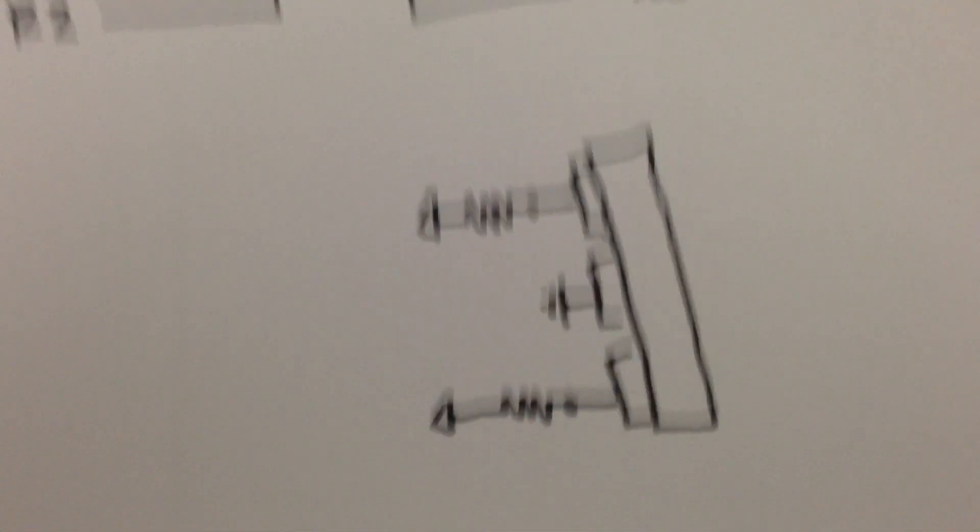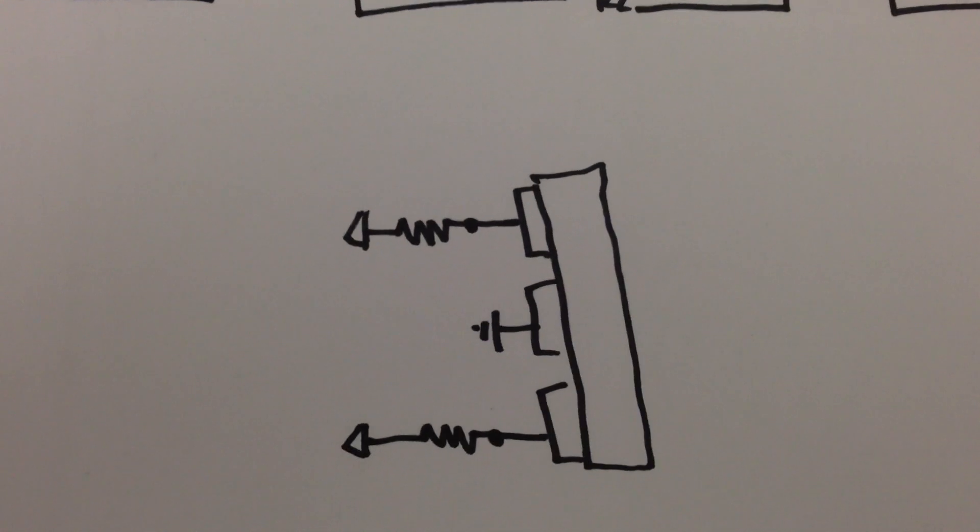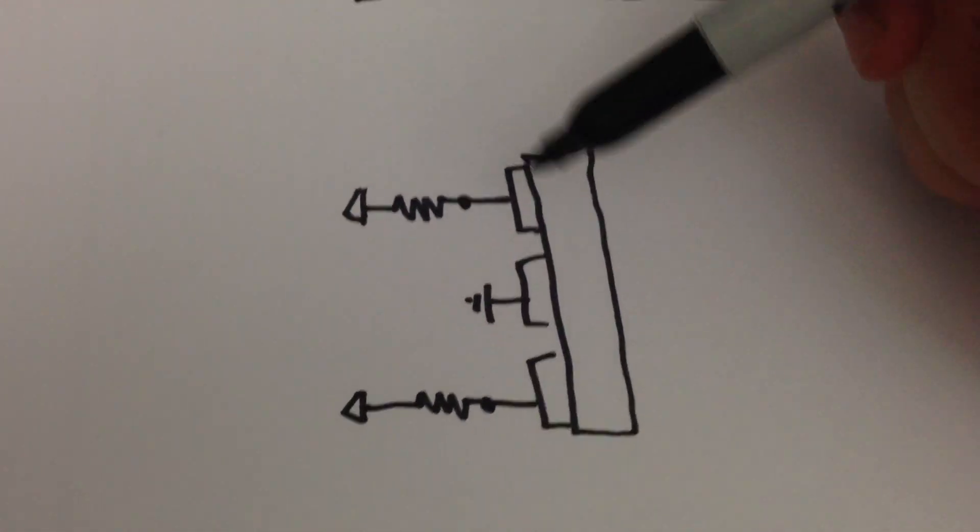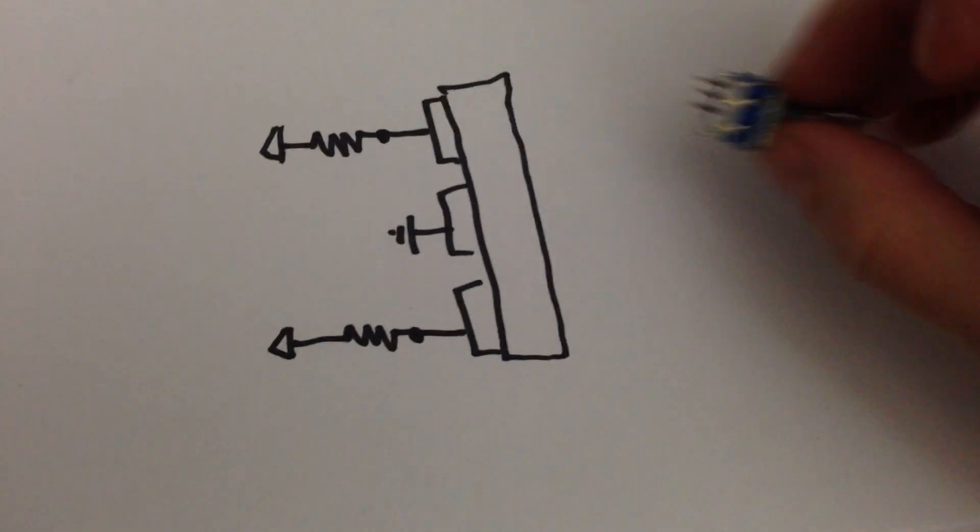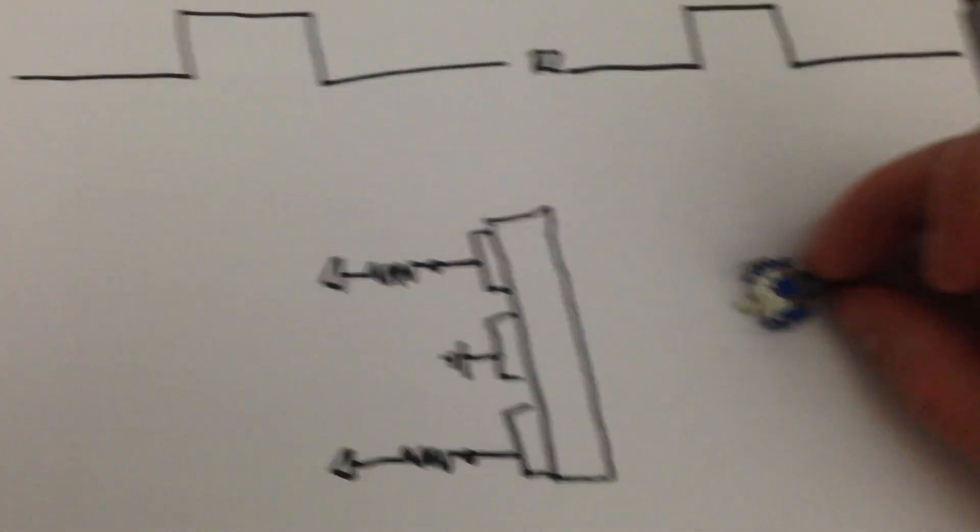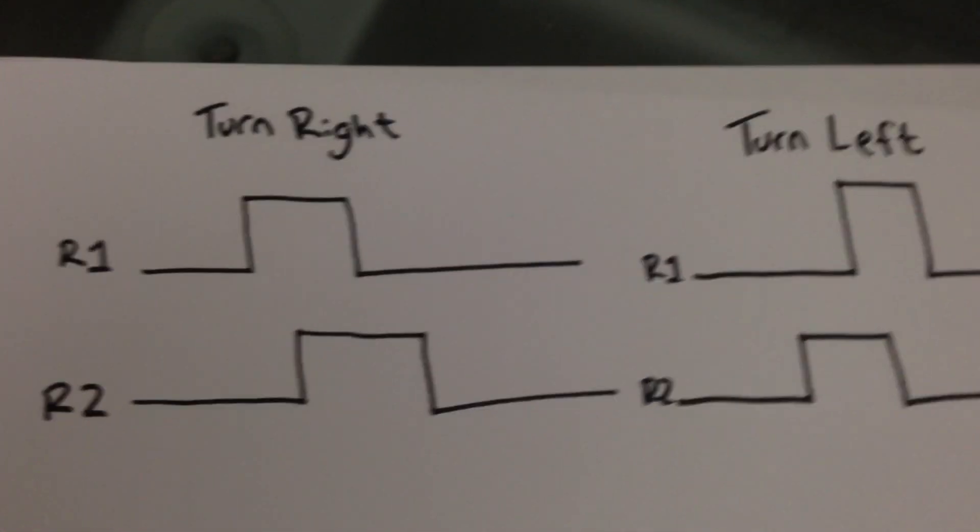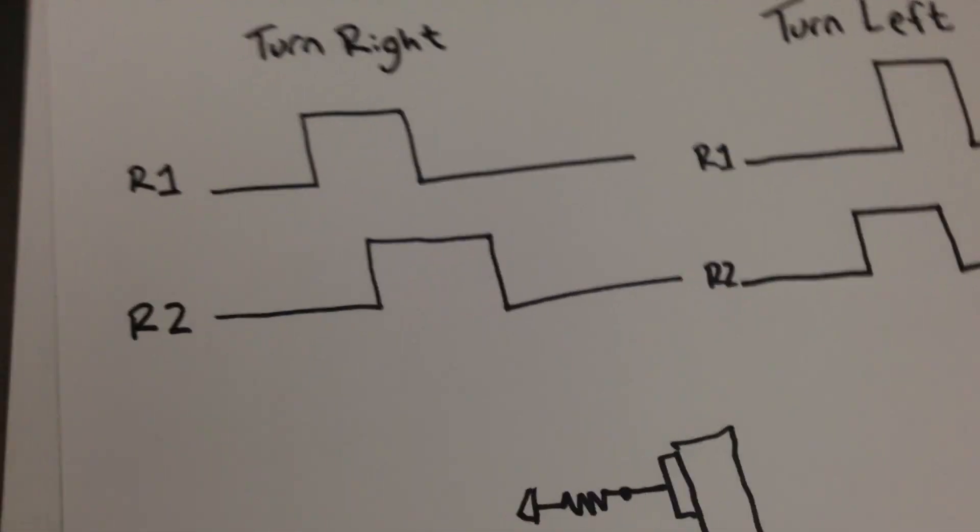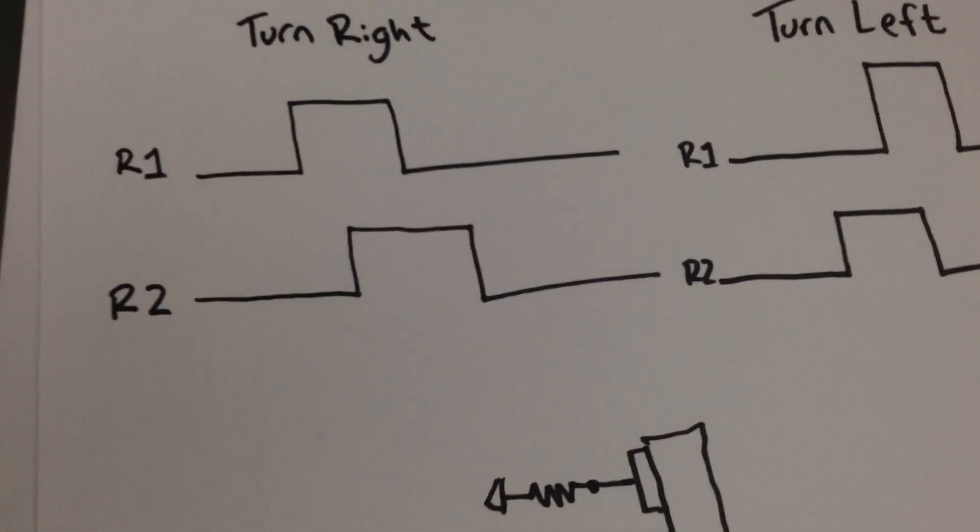And again, these resistors that I've drawn in here are handled in software. They're actually built into the microchip, so it requires no external components. I can wire these two pins directly to the microcontroller and do everything else in software. And I'm not going to talk about the details of that, but I will talk about how I handle the menu functionality pretty simply.